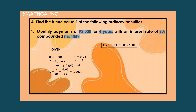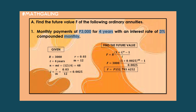Now let's find the future value using the future value equation. Substituting our given, F is equal to 3,000 times (1 plus 0.0025) raised to the power of 48, minus 1, over 0.0025. Using the calculator, the answer is 152,793.6252 pesos, which rounds up to 152,793.63 pesos.